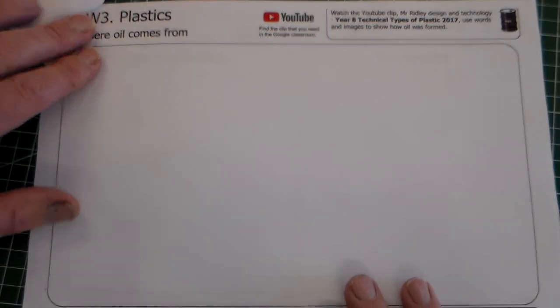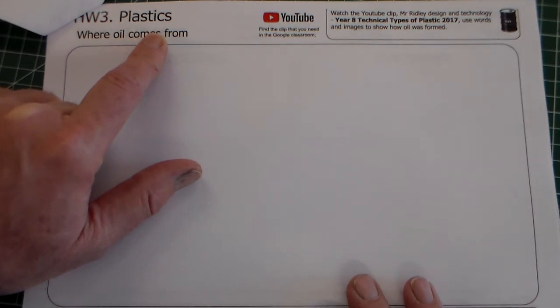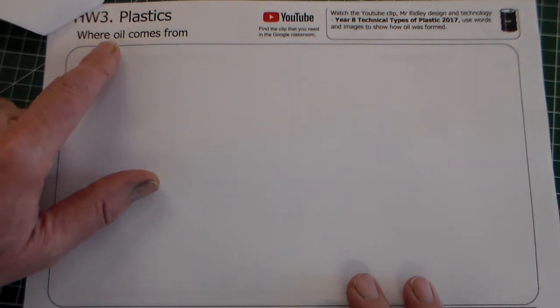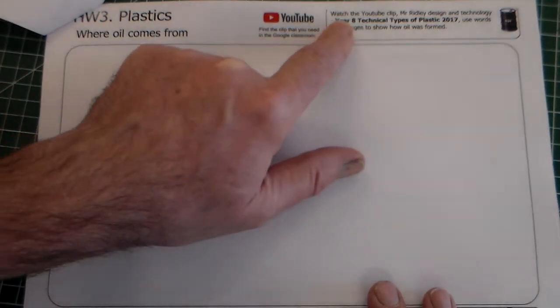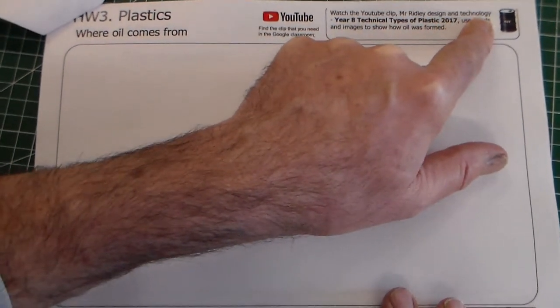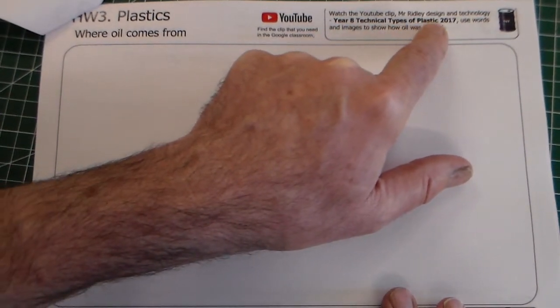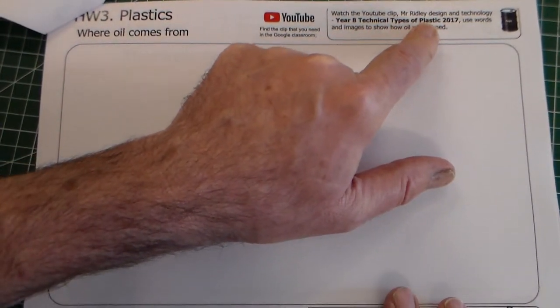Now we're looking at homework 3, which is about plastics. We're going to be using plastics in this project and this sheet is about plastics and where oil comes from. What you need to do for this homework is watch the YouTube clip, Mr Ridley's design and technology year 8 technical types of plastic. This clip is in the Google classroom for you to watch.